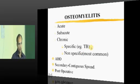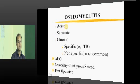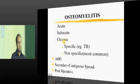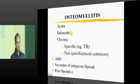Let us go into osteomyelitis proper. First, let us classify the types. Depending on temporal classification — the time duration — if symptoms last less than 3 weeks, it is called acute osteomyelitis. If symptoms last more than 3 weeks but less than 3 months, it is called subacute osteomyelitis. If symptoms last more than 3 months, it is called chronic osteomyelitis. We will come back to what those symptoms are in coming slides.